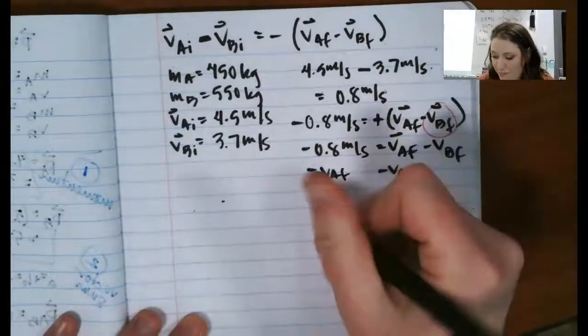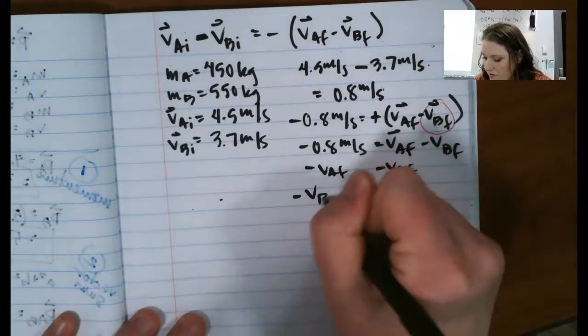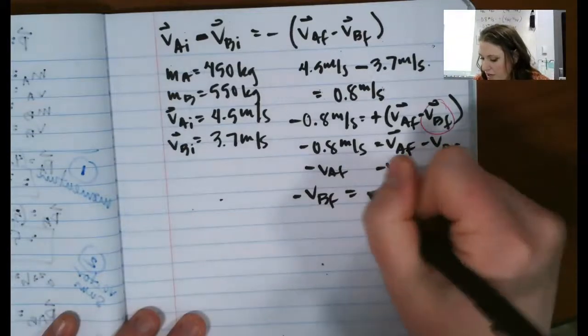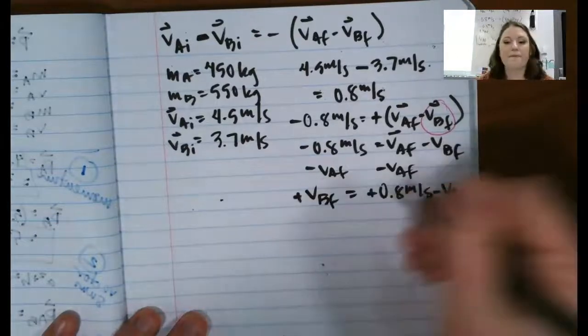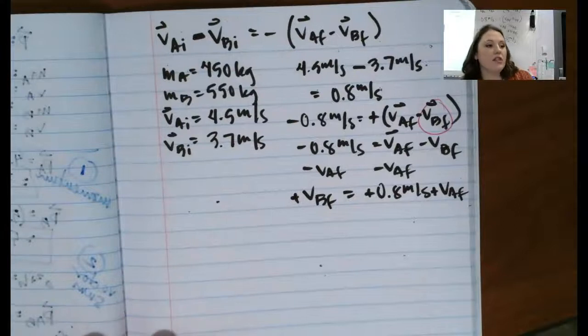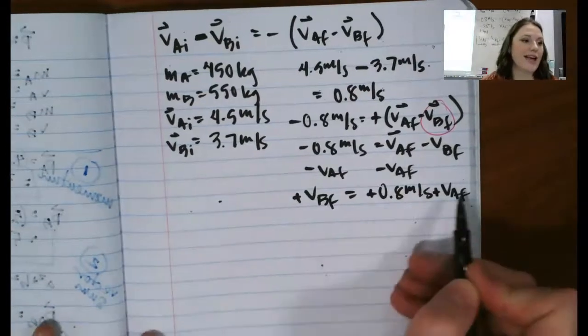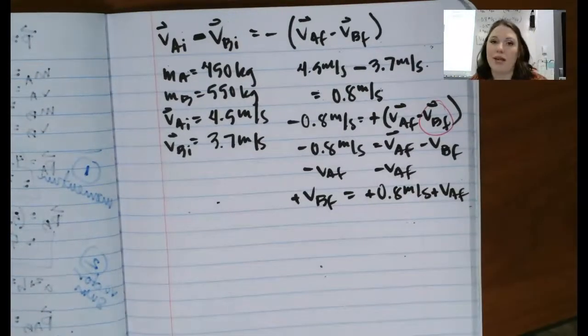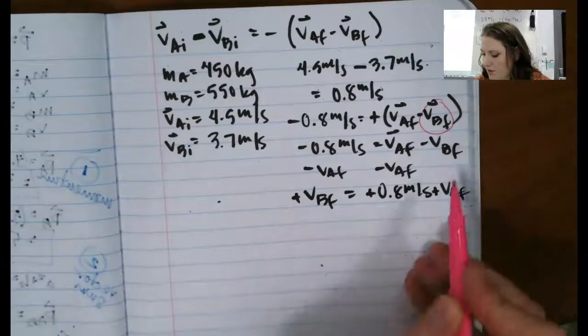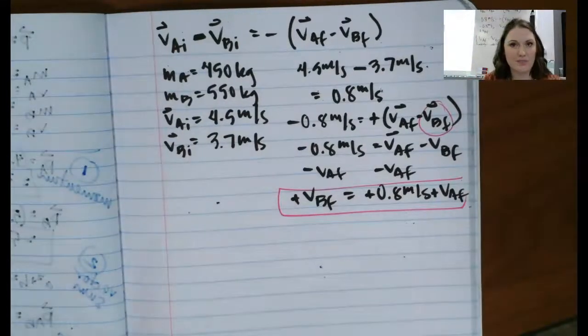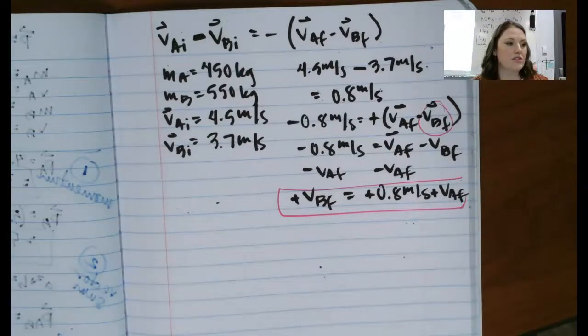So now I've got a bunch of negative signs everywhere, right? Negative B, B final equals negative 0.8 meters per second minus VAF. So I'm going to cancel all those, okay? So the final velocity of car B is going to be equal to whatever final velocity of car A is plus that 0.8 meters per second difference, okay? So this doesn't mean anything by itself, but it is a value I can now substitute in my momentum equation as I try to solve for each of these cars, right?